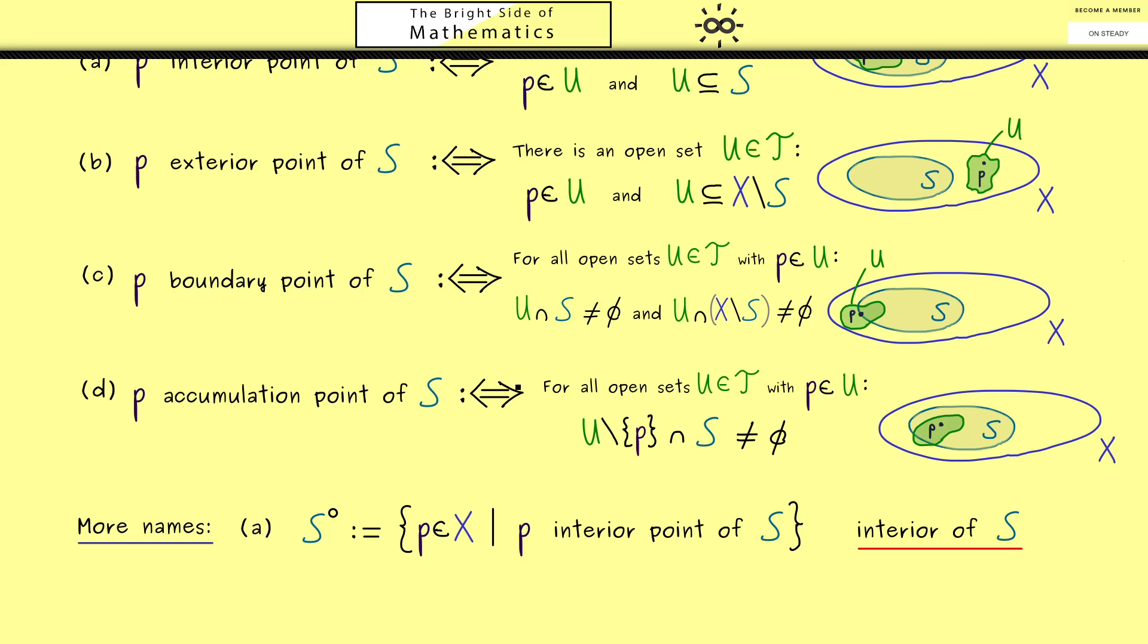Hence, the next thing will be the exterior of S. However, there we don't have a special symbol; we just write Ext(S). Then we collect all the exterior points of S and call this set the exterior of S.